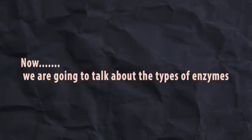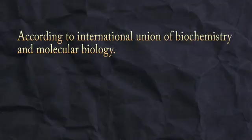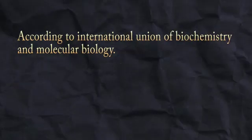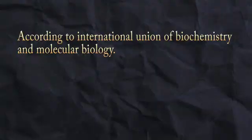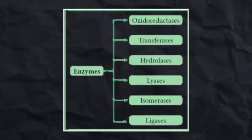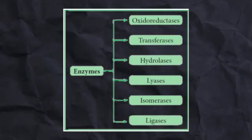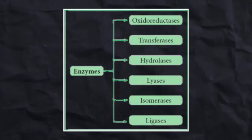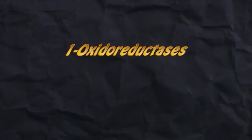Now we are going to talk about the types of enzymes. According to the International Union of Biochemistry and Molecular Biology, enzymes are classified into six main categories: Oxidoreductases, Transferases, Hydrolases, Lyases, Isomerases, and Ligases.